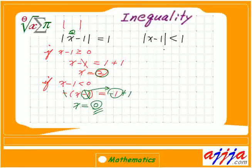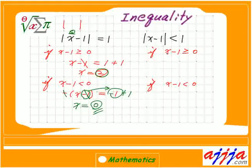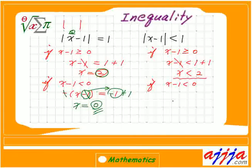Now what about inequality — very interesting! We have to treat this like two questions again. If x minus 1 is greater than or equal to 0, that's one case. If x minus 1 is less than 0, that's the borderline — especially in functions, you have to realize how important this is. For the first case, just solve it: x minus 1 is less than 1, so x is less than 2.